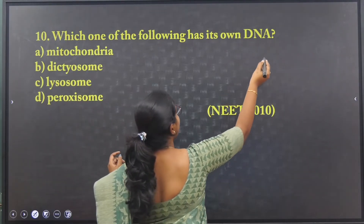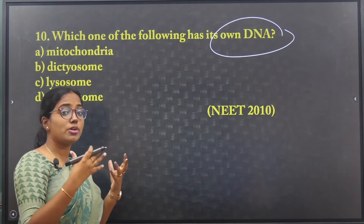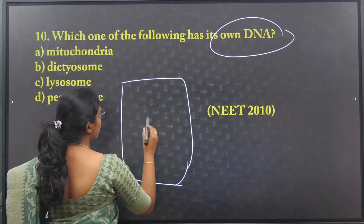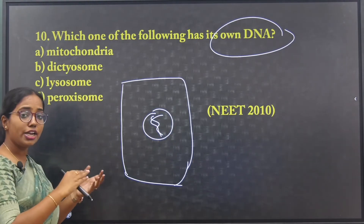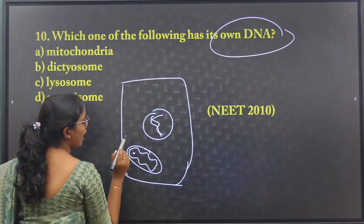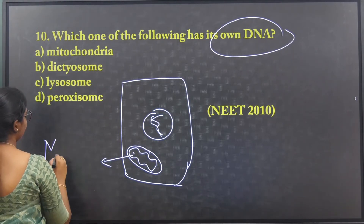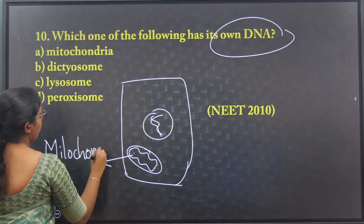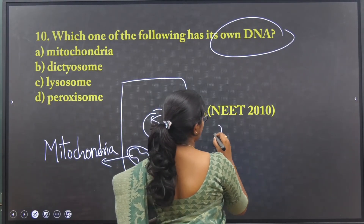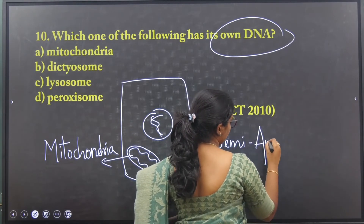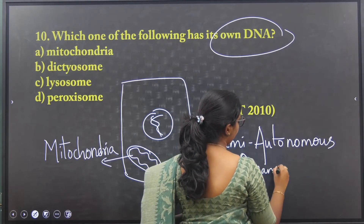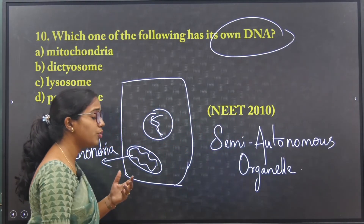Which one of the following has its own DNA? This refers to a semi-autonomous organelle. In any eukaryotic cell, genetic material is contained by the nucleus, but in addition to the nucleus, mitochondria also have their own DNA. That is why mitochondria are called semi-autonomous organelles.